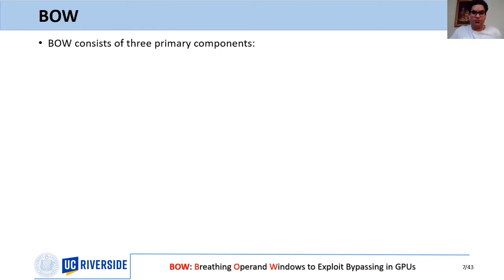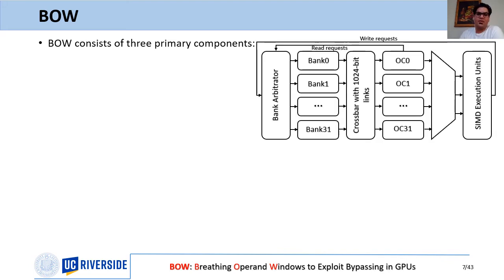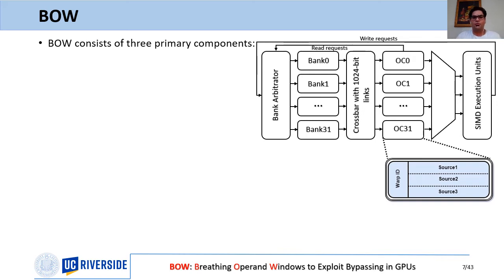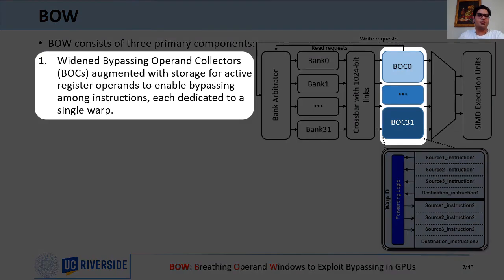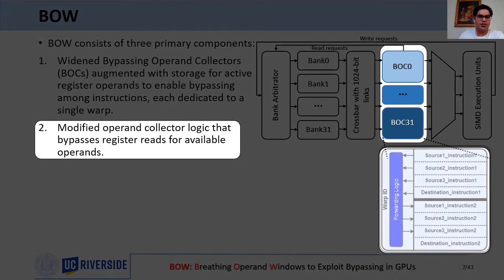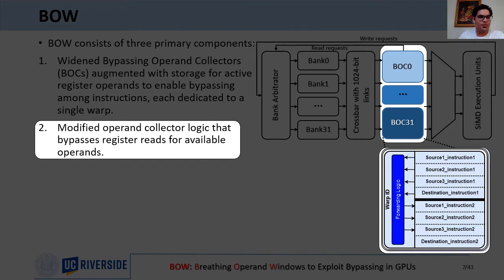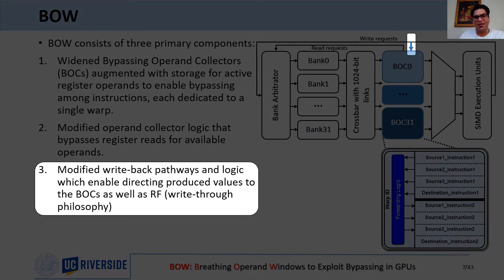BO consists of three primary components. Each operand collector in the baseline holds a single warp instruction and collects source operands; once complete, the instruction is issued and results are written back to the register file. In our design, the first component is widened operand collectors called Bypassing Operand Collectors, or BOC, which hold more than a single warp instruction to enable operand forwarding. Each BOC is dedicated to a single warp. We also modified the operand collector logic to bypass register reads for available operands. To enable read bypassing, we modified the write-back pathway to direct produced values to both the BOCs and the register file banks using a write-through philosophy.